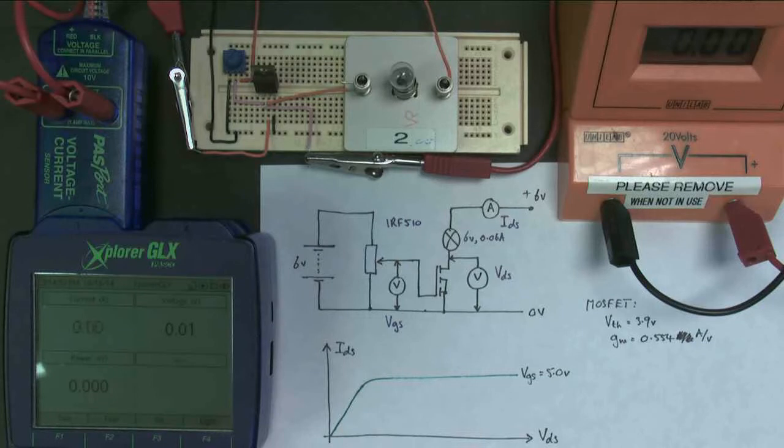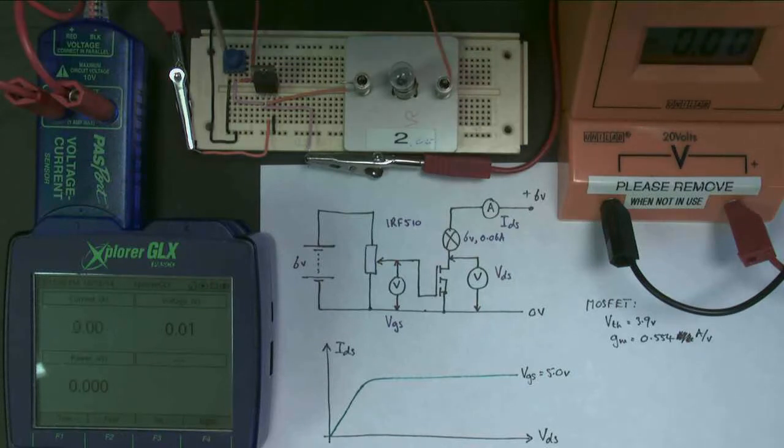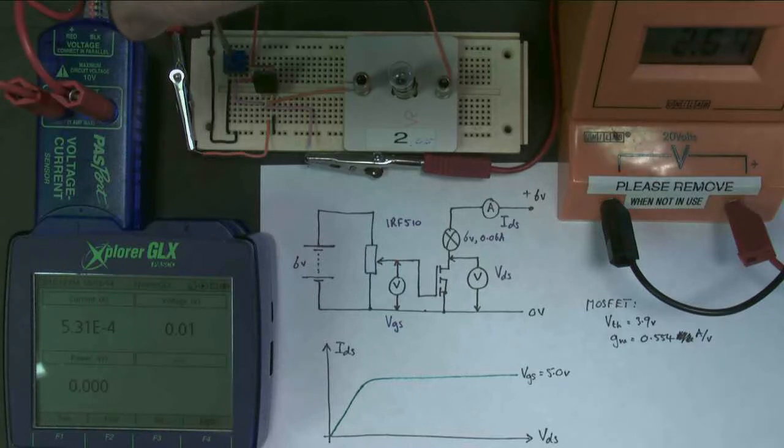And we're going to try and work out what's going to happen. Now, first of all, I'm going to pretend that this is a circuit which is being used to turn the light bulb on and off from a logic circuit. So I'm going to set my gate voltage to be the output from a logic circuit. I'm going to set it to be 5 volts. And I've drawn that on my diagram, on my graph.